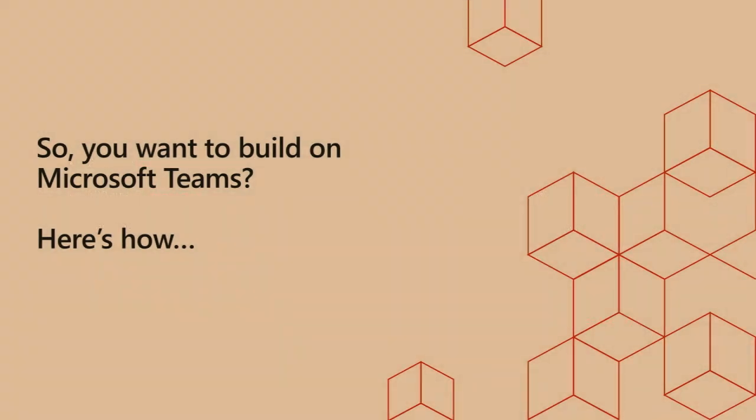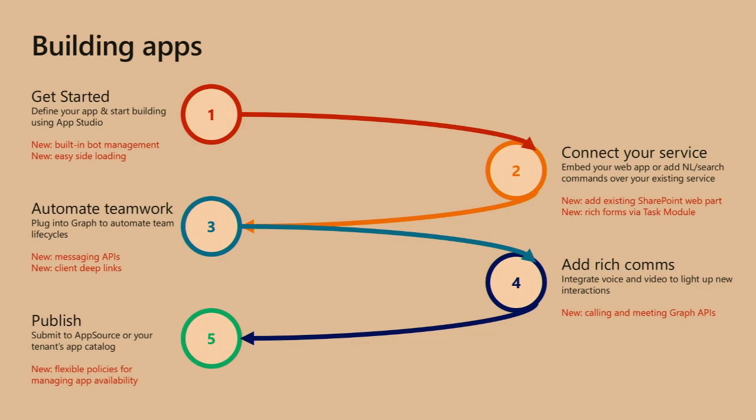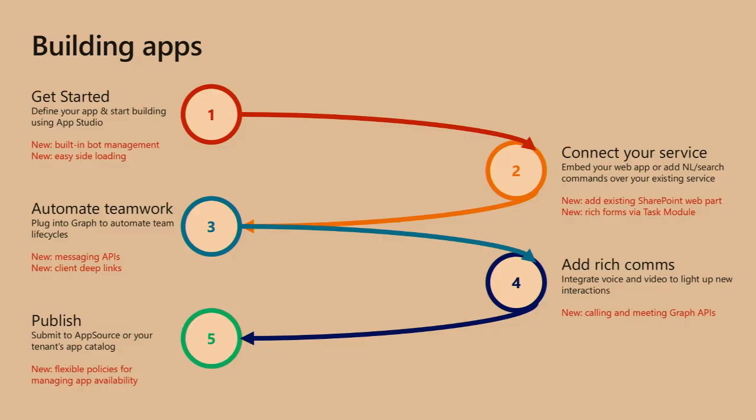That was the 'why.' Let's talk a little bit about how. We think about building apps as a five-step process: how do we get started, how do we connect your existing services, how can we do some automation — spinning up meetings or teams programmatically — adding rich comms, and finally what are your options for publishing? That could be as a partner publishing something to the community, or internally publishing something into your own company app store.